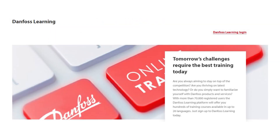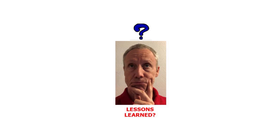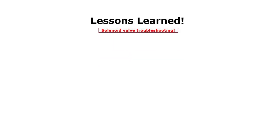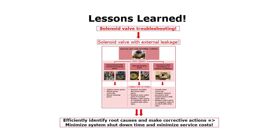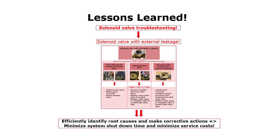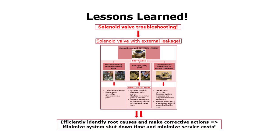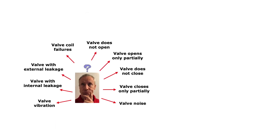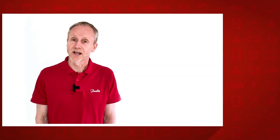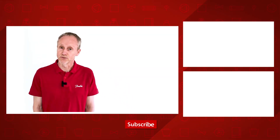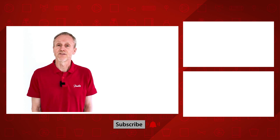Check out other Danfoss online learnings about selection and installation of solenoid valves. To summarize, from this solenoid valve troubleshooting video, you now know how to efficiently identify root causes and make corrective actions related to a solenoid valve with external leakage. This way, minimizing system shutdown time and service costs. Please search for the other online solenoid valve troubleshooting videos to learn about relevant valve failure root causes and how to solve them with suitable corrective actions. Have a look at the other Danfoss online videos about solenoid valve troubleshooting and other videos where I talk about valves. Thanks for watching.